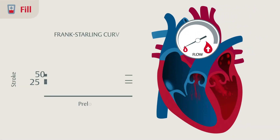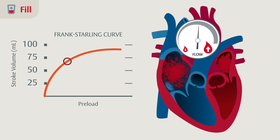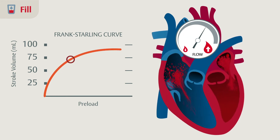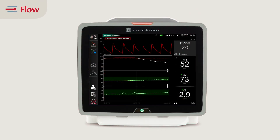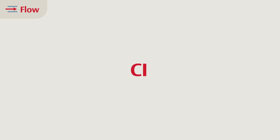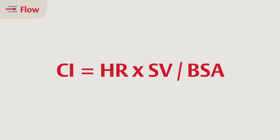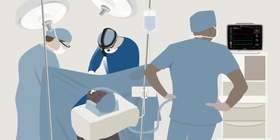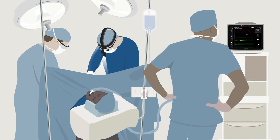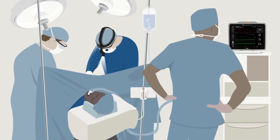Once we establish the patient's optimal stroke volume — say 70 mL per beat — we will try and maintain this target value throughout the surgery. We next need to ensure we have enough oxygen delivery. You can do a quick estimate by looking at the cardiac index, which should be maintained over 2.2 litres per minute per metre squared and individualised to the patient. Once we know the flow and oxygen delivery are adequate, small fluid boluses can be administered to maintain the stroke volume.